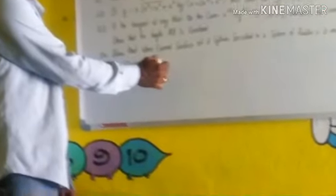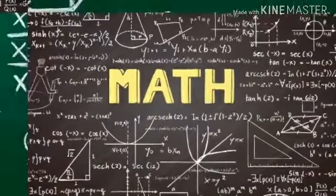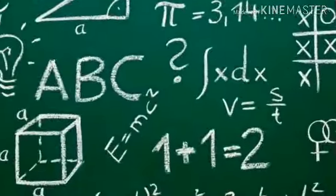17th Question: Find length of the normal and subnormal at a point on the curve y equal to a by 2 into e power x by a plus e power minus x by a.